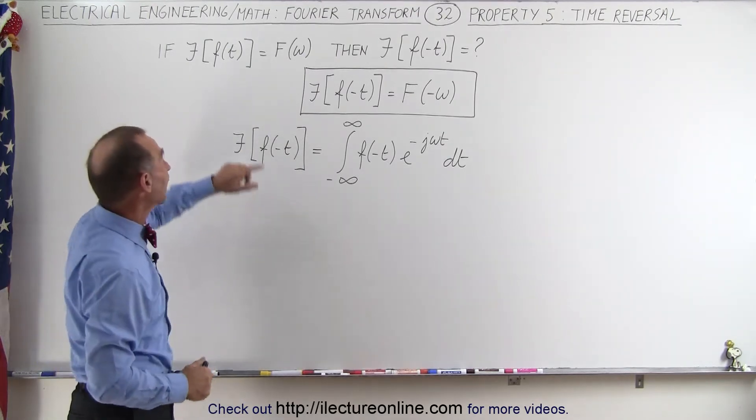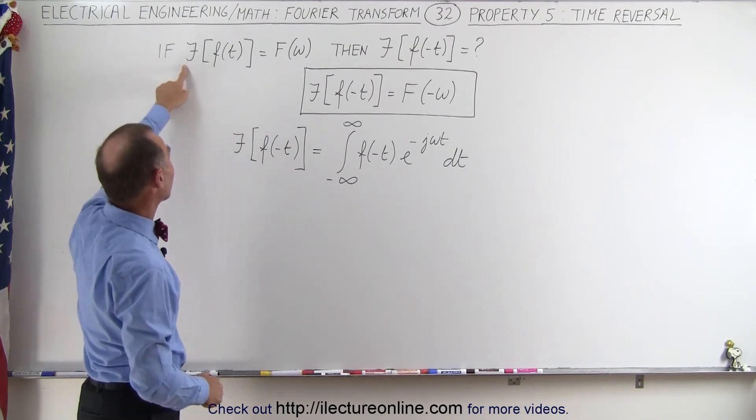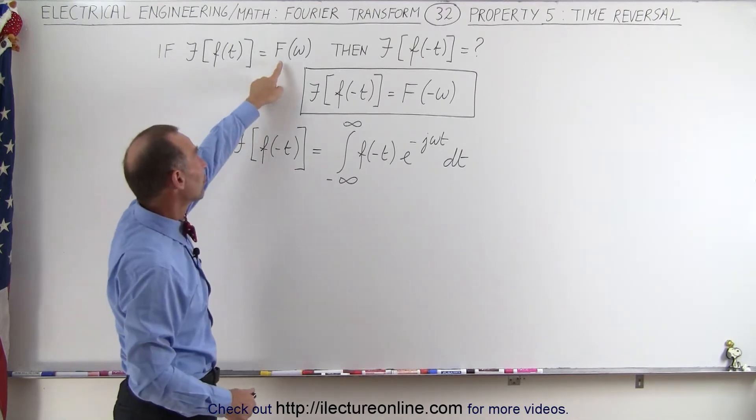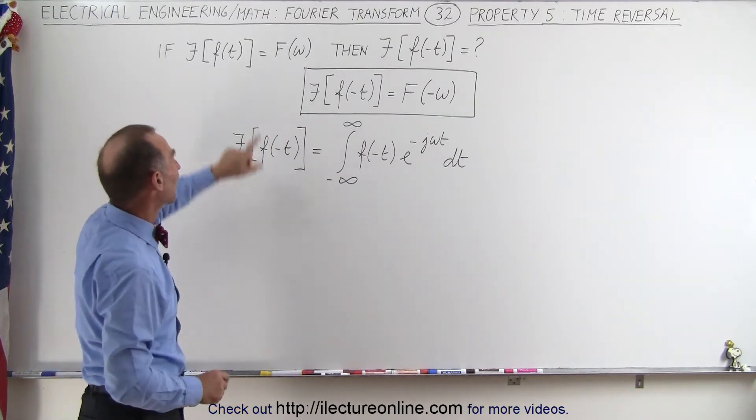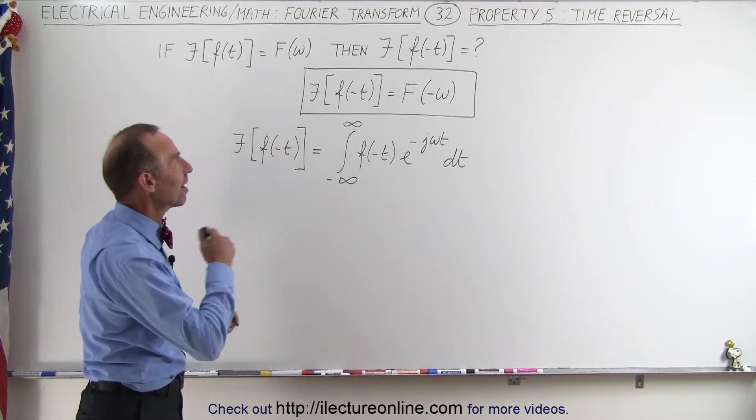What happens if we have a function in the time domain and we take the Fourier transform and then we get the Fourier transform of that function in the frequency domain? What if we now replace the t by negative t, so reverse the time?